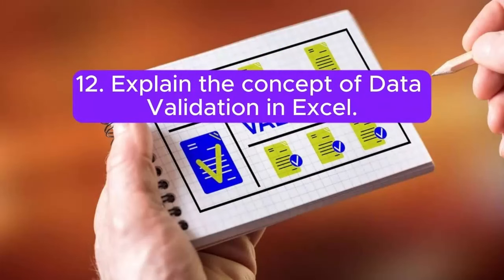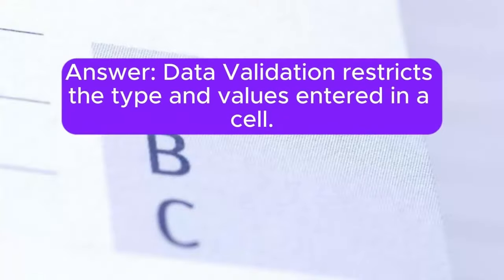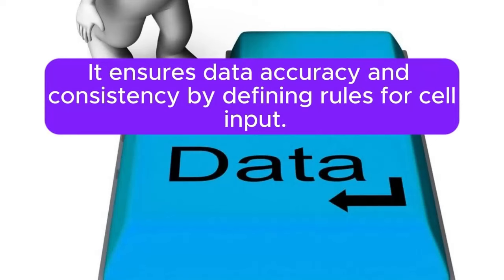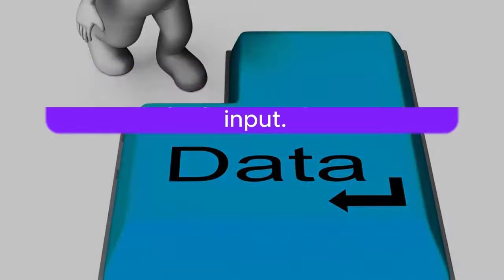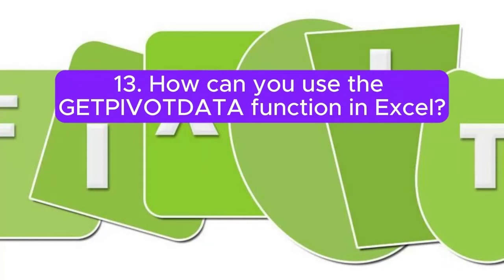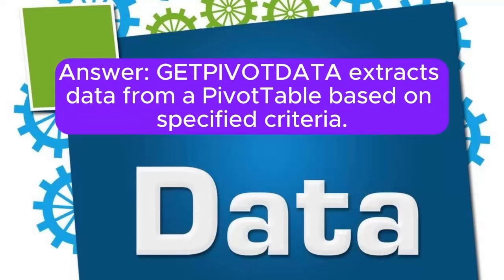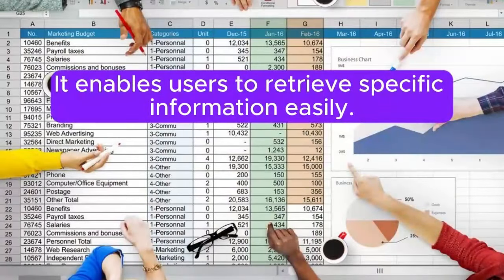Question 12: Explain the concept of data validation in Excel. Data validation restricts the type and values entered in a cell. It ensures data accuracy and consistency by defining rules for cell input. Question 13: How can you use the GETPIVOTDATA function in Excel? GETPIVOTDATA extracts data from a PivotTable based on specified criteria, enabling users to retrieve specific information easily.